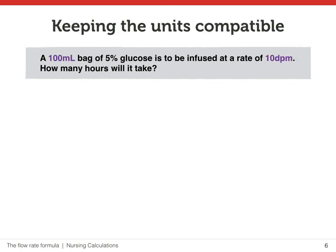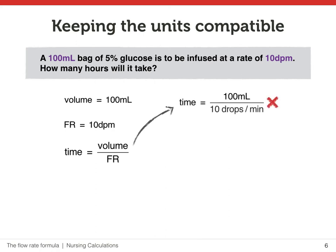In our next problem, we need to find the time again, but this time we are given the volume in mils and the flow rate in drops per minute. What is more, we are looking for the time in terms of hours. Unfortunately, we cannot have hours and minutes in the same formula, so we will have to get our answer for time in minutes first, and then at the very end we can turn the minutes into hours. Similarly, the mils and the drops cannot exist together in the same formula, so one of them will have to change.